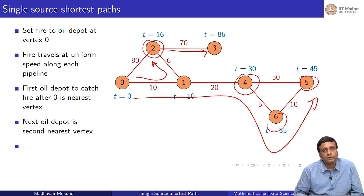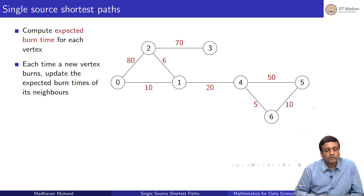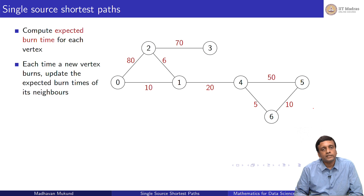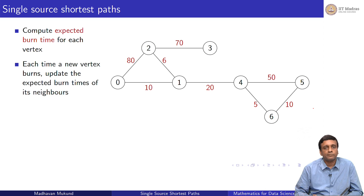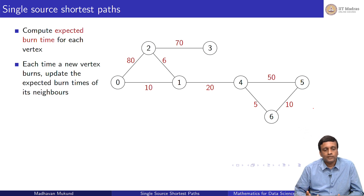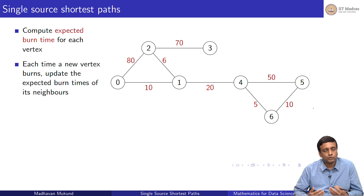How do we keep track of when the pipeline is going to burn next? What we do is compute, at every given point, when each vertex is expected to burn. Based on information about which pipelines are burning and which oil depots have burnt, we compute the expected time to burn. Among all the vertices, the one expected to burn next will burn next — at that time, we burn it. Once a vertex burns, it starts new fires towards its neighbors.